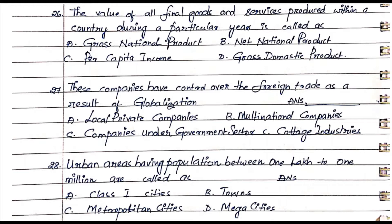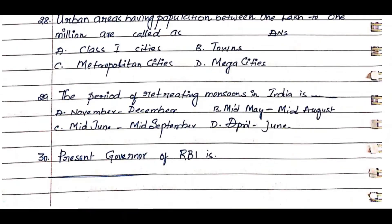Question 28: Urban areas having population between 1 lakh to 1 million are called. Option A. Class 1 cities, Option B. Towns, Option C. Metropolitan cities, Option D. Mega cities. The answer is Option A. Class 1 cities.